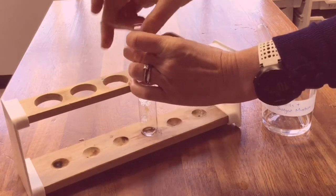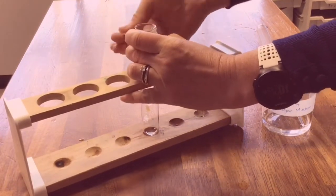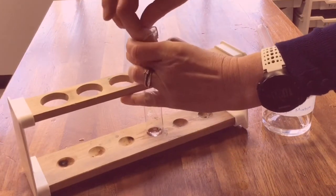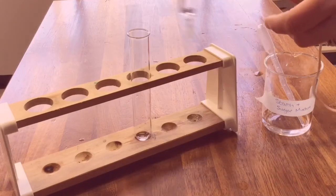Once we've done this then we will surround the visking tubing with water and that will be to represent the blood because the digested food enters into our blood system.